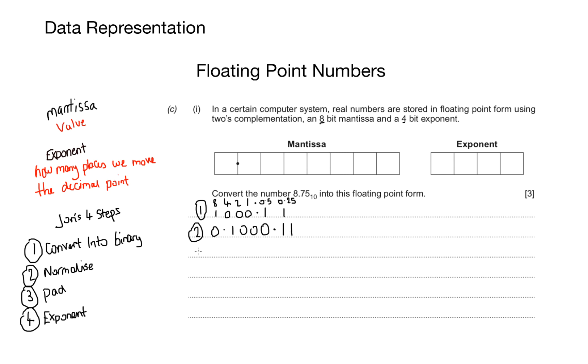That comes out as 0.1000011. Again, don't worry about the second point at this stage. Step three is padding. We are asked to represent an 8-bit mantissa. Currently I've used one, two, three, four, five, six, seven. So all I need to do is pad by putting a zero on the right hand side of my number.